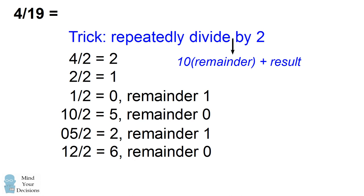But what we figured out is that these values of our results, 2, 1, 0, 5, 2, and 6, this is the decimal expansion of 4 over 19, 0.210526. And it's pretty interesting that we can figure out how to divide by 19 just by repeatedly dividing by 2. You can check on your calculator. This is the correct result.